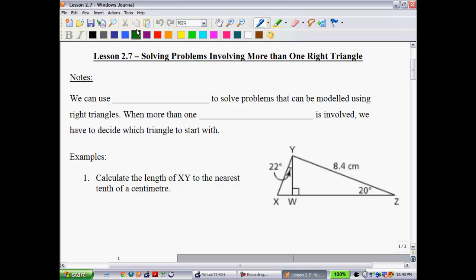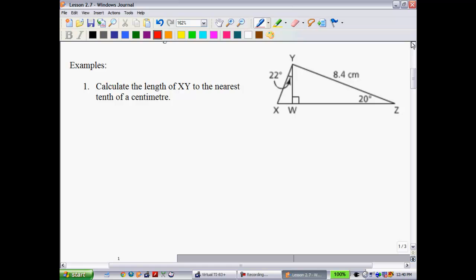We can use trigonometry to solve problems that can be modeled using right triangles. When more than one right triangle is involved, we have to decide which triangle to start with. So a question like we have right here. It says calculate the length of XY to the nearest tenth of a centimeter. You need to look at what information you have and where you're looking. If you look, there's two triangles. I'll call this one maybe one and two. You see that we have more information about triangle two. And we're trying to work our way to find out what that side is. So what we're usually going to have to do is look for the side length or the angle that's shared by both triangles.